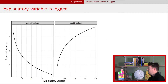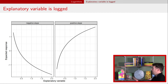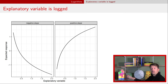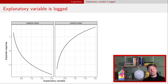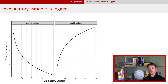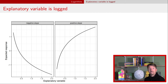The relationships when the explanatory variable is logged show two functional forms — one with a negative value for beta one and one with a positive value. Unlike the log-response model, you can go below zero on the response scale here because we didn't take any logarithms of y.